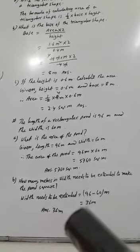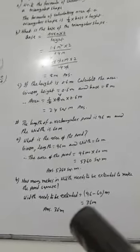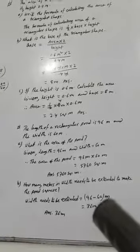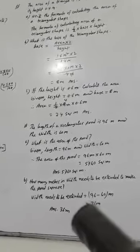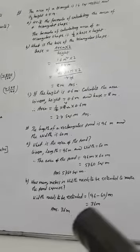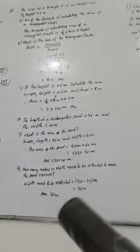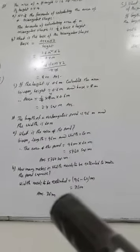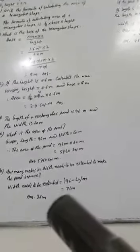If we extend the width by 36 meters, then the width will be 96 meters and the length will be 96 meters. Then we will get a square shape. To make the pond square, we have to extend the width by 36 meters.